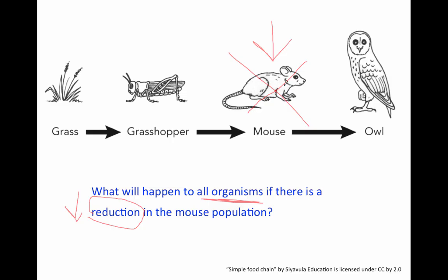Alright, so if the mouse population is decreasing, then its predator, the owl, won't have any food to eat, so the owl is going to decrease. But then the grasshopper, who is the prey of the mouse — if there aren't very many mice keeping the grasshoppers in check, the grasshoppers are going to increase. And then due to all the grasshoppers increasing, the grass is going to end up decreasing. I know this because the grass gets eaten by the grasshopper, the grasshopper gets eaten by the mouse, and the mouse gets eaten by the owl. Go ahead and erase your whiteboards at this time.